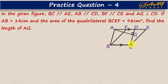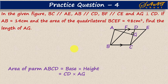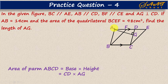Since parallelograms ABCD and BCEF are standing on the same base and between the same parallel lines, their areas are equal. Once we have the area of ABCD, we can use the formula: area of parallelogram equals base times height. The base is CD and the height is AG, which is what we need to find. Since AB equals CD (opposite sides of a parallelogram are equal) and AB is 14 cm, you can substitute to find AG. Try this challenge yourself: first find area of ABCD equal to area of BCEF, then use that relation to find AG.